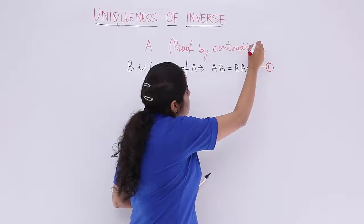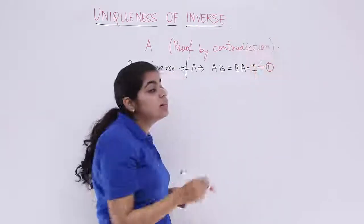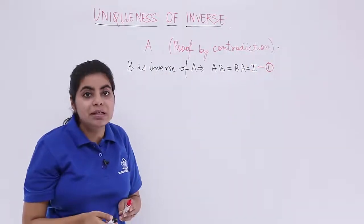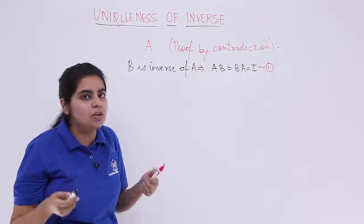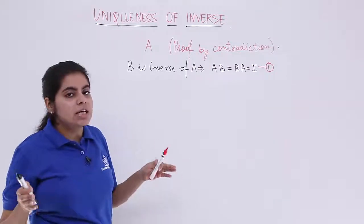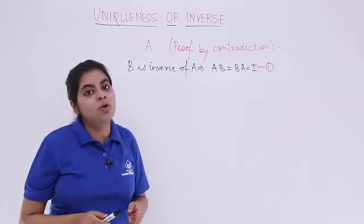You would have already seen this in your junior classes of class 10th where we proved root 2 is a rational or irrational number. There also we use the proof by contradiction.